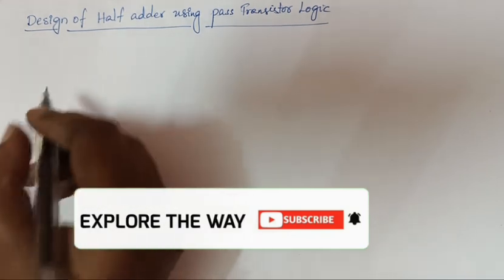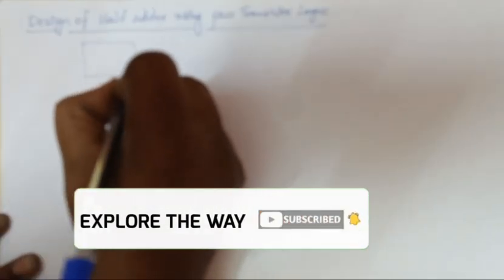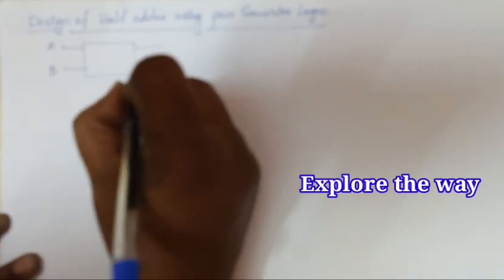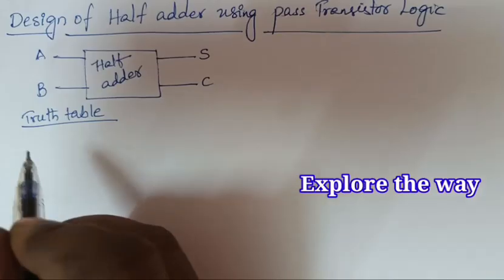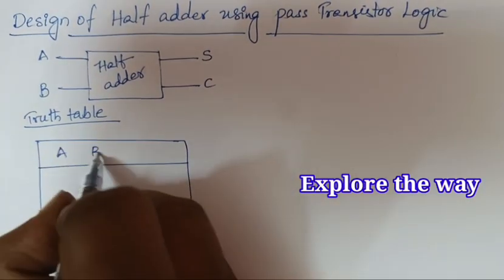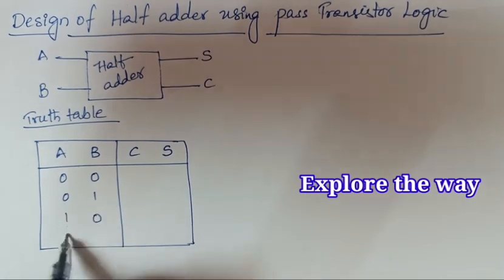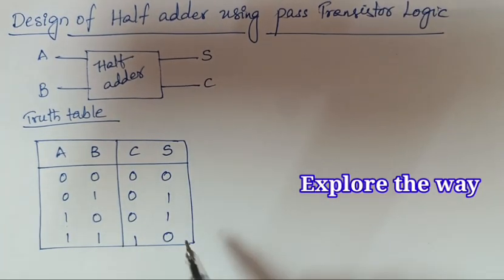The first step is to draw the truth table for a half adder. A half adder has two inputs, A and B, and two outputs: sum and carry. Now let's draw the truth table for the half adder. This is the truth table of the half adder.